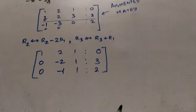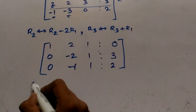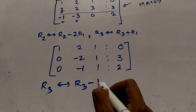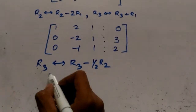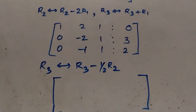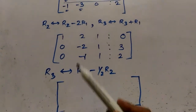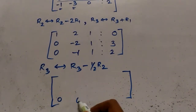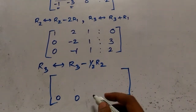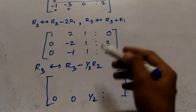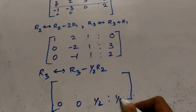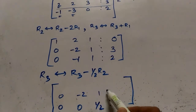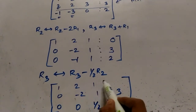The next row transformation is: Row 3 becomes Row 3 minus one-half of Row 2. So: 0 minus 0 is 0, minus 1 plus 1 is 0, 1 minus one-half is one-half, and 2 minus 3/2 is one-half. The rest of the rows remain the same: Row 1 is 1, 2, 1, 0 and Row 2 is 0, minus 2, 1, 3.